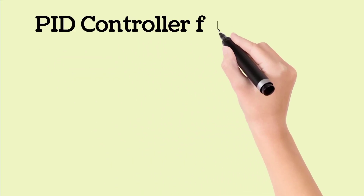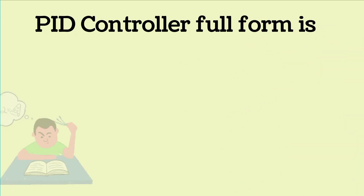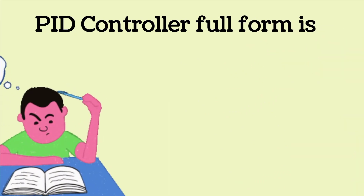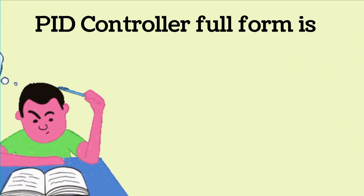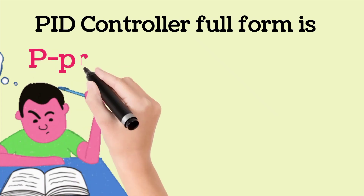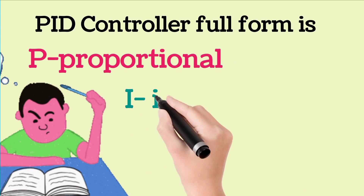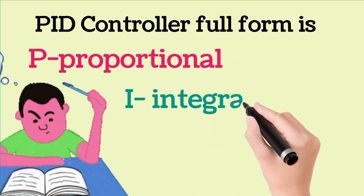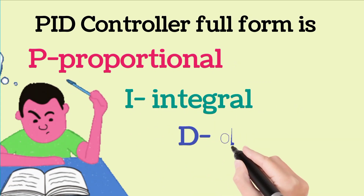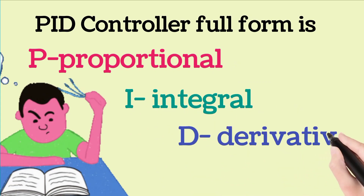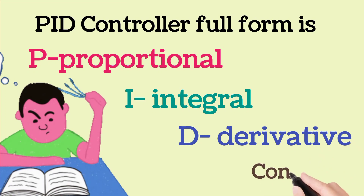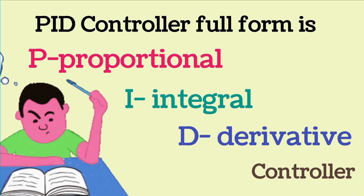Now we will see the PID controller full form, which is also very important for your interview. P means Proportional, I means Integral, and D means Derivative — so it becomes Proportional Integral Derivative controller.